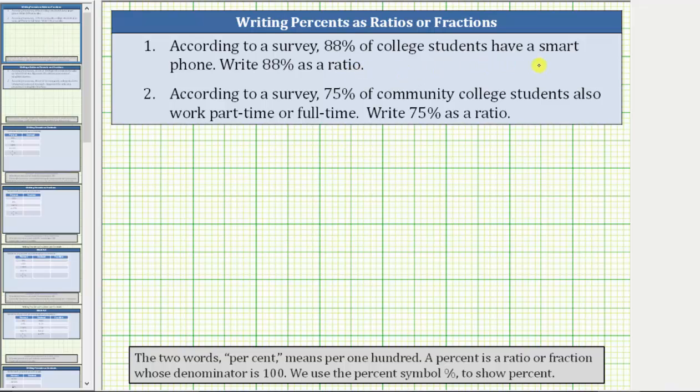According to a survey, 88% of college students have a smartphone. Write 88% as a ratio.